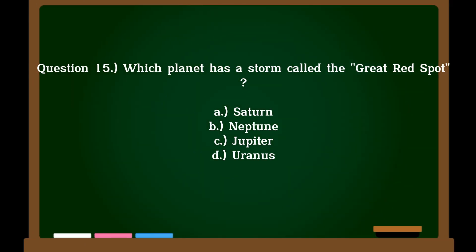Question 15. Which planet has a storm called the Great Red Spot? A. Saturn, B. Neptune, C. Jupiter, D. Uranus. Correct answer: C. Jupiter.